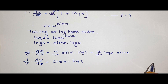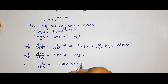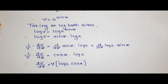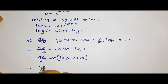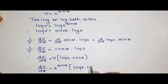The derivative of log 2 is 0 since log 2 is a constant, so that term vanishes. We get dv by dx is equal to log 2 into cos x, multiplied by v. Resubstituting the value of v, which is 2 raised to sin x, we get dv by dx is equal to 2 raised to sin x into log 2 into cos x.